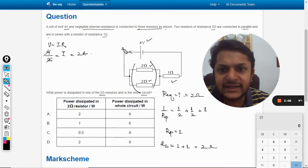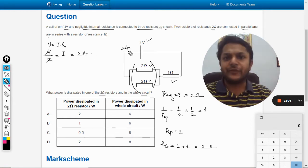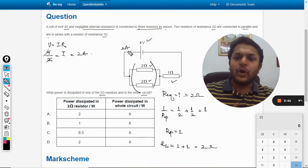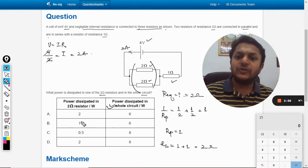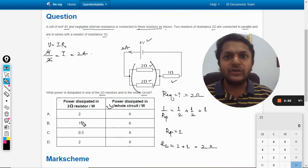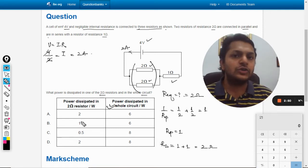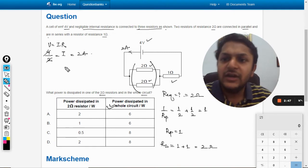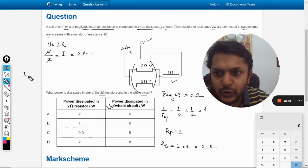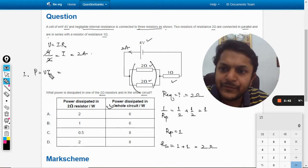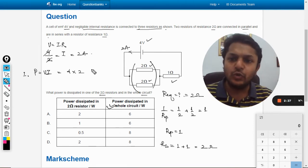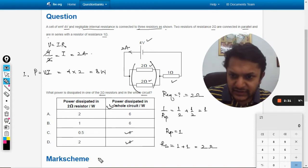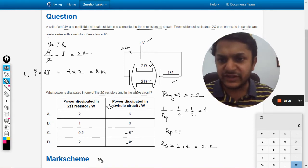So 2 ampere is the current. Now to find the power dissipated in the whole circuit, because that is easier, we are doing this first. We can either find the total power supplied by the battery or the total power consumed by R equivalent. In both ways I am going to do it. First we apply P = VI, so the voltage is 4 and the current coming out of the battery is 2, so 8 watt is your answer.